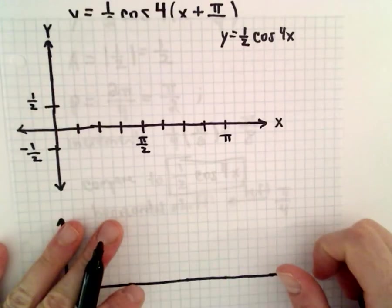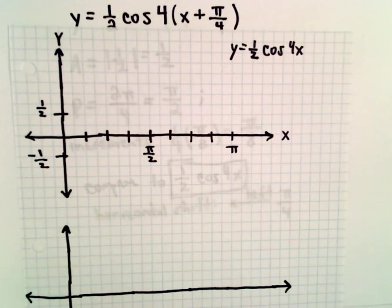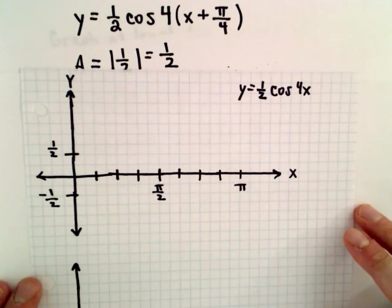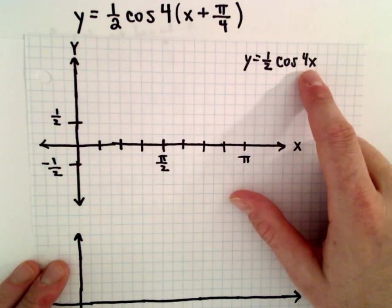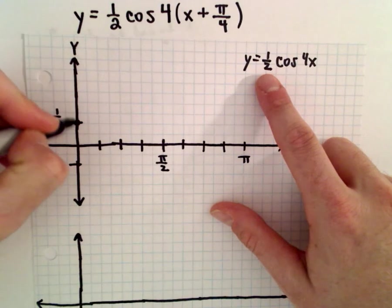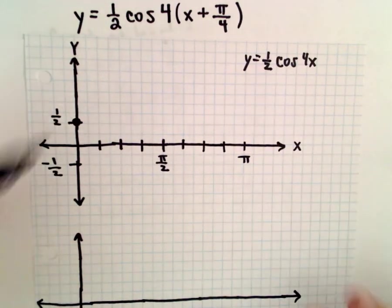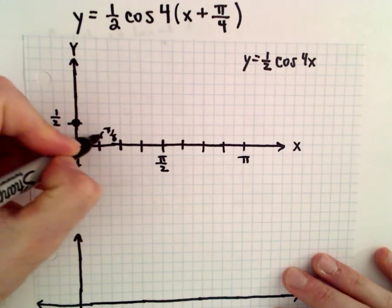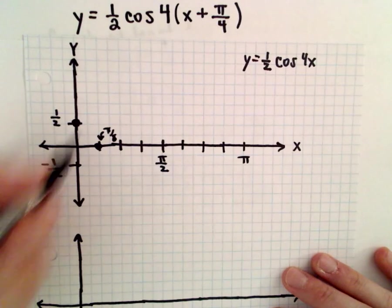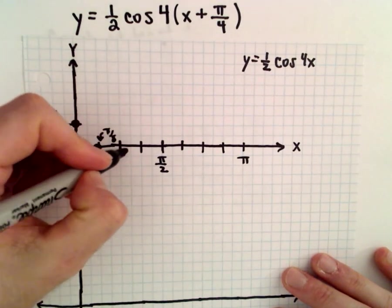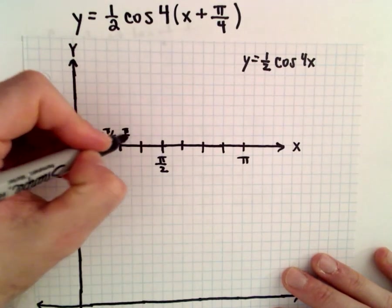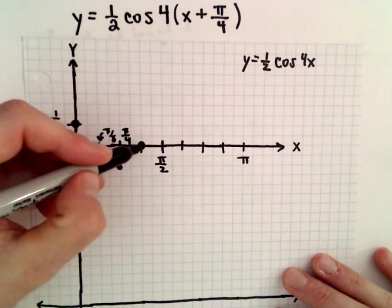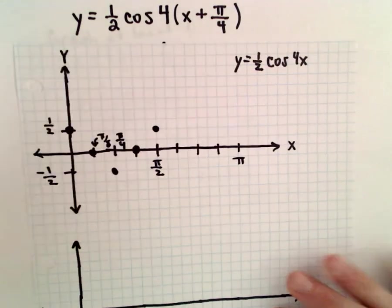Well, if you substitute in x equals zero, you can always just start plotting points. If you substitute in x equals zero, we'll get cosine of zero, which is 1, times a half. So at zero, we're going to be sitting at one-half. And then at the next value, which we said was going to be pi over 8, we'll be at zero, and then at 2 pi over 8, or pi over 4, we're going to be at negative one-half, and then we'll be back at zero, and then we'll be back up at positive one-half.